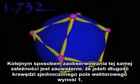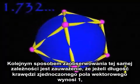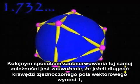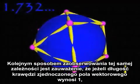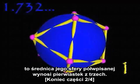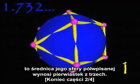Another way of observing this same relation is to note that if the edge length of the unified vector field equals 1, then the diameter of its inter-sphere measures the square root of 3.